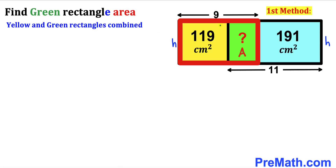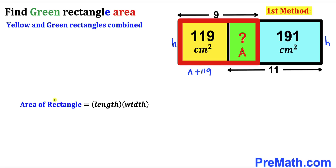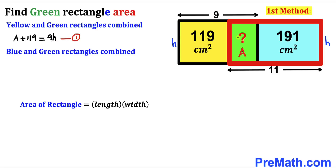Let's focus on the yellow and green rectangles combined. Their combined area is going to be a plus 119. Recalling the area formula — area equals length times width — our dimensions are h and 9 for this combined area. So we can write: a + 119 = 9h. We'll label this equation number one.